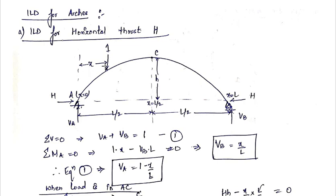Suppose this is your unit rolling load, moving from support A towards support B. At any instant of time, this rolling load is at a distance of small x from support A. The value of x will be 0 at A support, L by 2 at the C point, and capital L at support B.